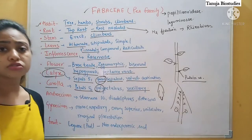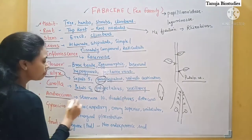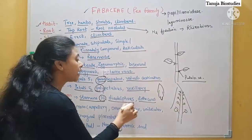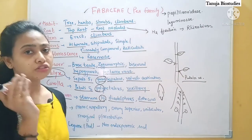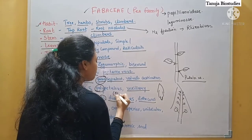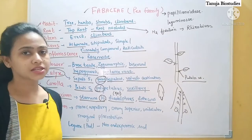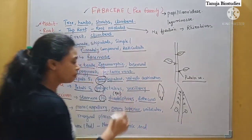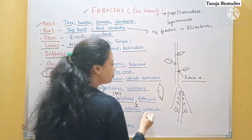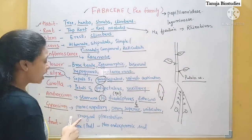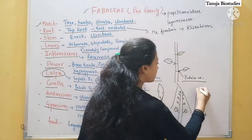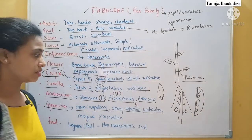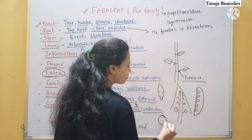In vexillary aestivation, there is one large standard petal at the back, two wings on either side, and two inner keel petals that are jointed — so five petals are arranged this way. The androecium has ten stamens and they are diadelphous — divided into two groups — specifically the 9+1 arrangement, where nine stamens are in one bundle and one stamen is separately present. The gynoecium is monocarpellary — one carpel — with a superior ovary, unilocular, and marginal placentation where ovules are present on a ridge-like structure along the margin.